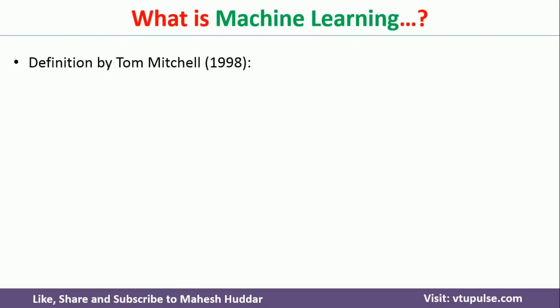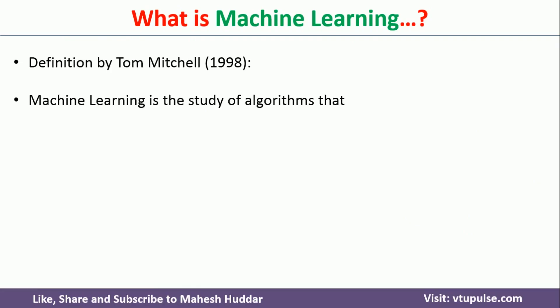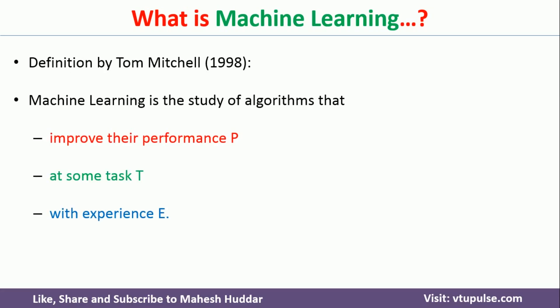The first question is: what is machine learning? The definition of machine learning given by Tom Mitchell is one of the famous definitions, given in 1998. According to Tom Mitchell, machine learning is the study of algorithms that improve the performance P at some task T with experience E. For a particular task, if you design an algorithm and the performance of that algorithm is improving with experience, then you can say that the machine is learning. Otherwise, the machine is not learning.